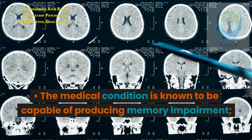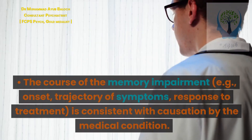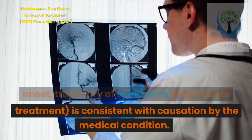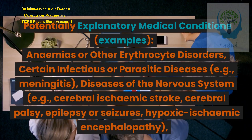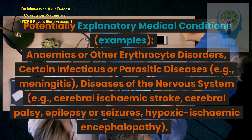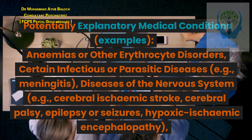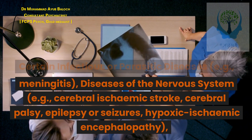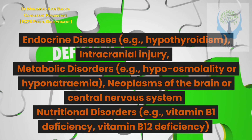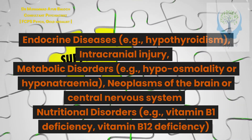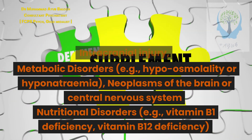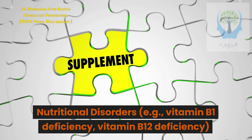This judgment depends on establishing that the medical condition is known to be capable of producing memory impairment, and the cause of the memory impairment — for example onset, trajectory of symptoms, response to treatment — is consistent with causation by the medical condition. Potentially explanatory medical conditions include: anemias or other erythrocyte disorders; certain infectious or parasitic diseases, for example meningitis; diseases of the nervous system, for example cerebral ischemic stroke, cerebral palsy, epilepsy or seizures, hypoxic ischemic encephalopathy; endocrine diseases, for example hypothyroidism; intracranial injury; metabolic disorders, for example hypoosmolality or hyponatremia; neoplasms of the brain or CNS; nutritional disorders, for example vitamin B1 deficiency, vitamin B12 deficiency.